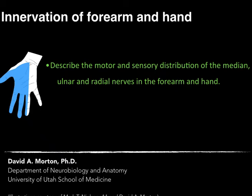The purpose of this tutorial is to cover the innervation of the forearm and hand. We'll describe motor and sensory distributions from the median, ulnar, and radial nerves, with a focus on the forearm and hand.